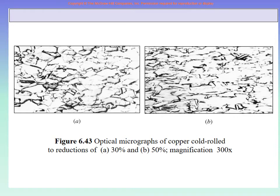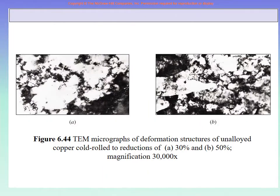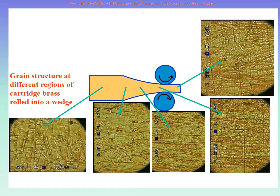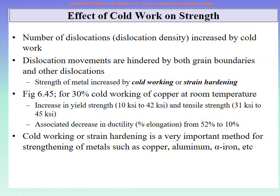We provided microscopic-level figures at large magnification to further prove the point, along with a schematic diagram showing the process of rolling and what happens to grain size and structure as material passes through the rolls. These originally large grains become very elongated, long, needle-like grains. We then continued talking about the effect of cold work on strength.